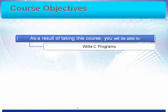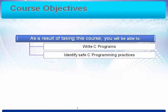As a result of taking this class, you'll be able to write C programs. You'll not only identify safe C programming practices — we're hoping that you'll implement them. C is a language that gives you a lot of freedom, and with that freedom comes responsibility. There are a lot of things it lets you do that you can't do in other languages, because it's intended to allow you to really interact with the system. But you can also get yourself into trouble, so we want to help you understand what's really going on and why, so that when you're programming you really have a feel for what you're doing.